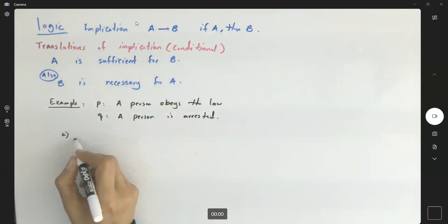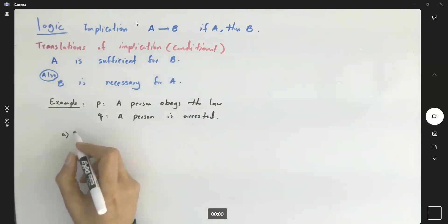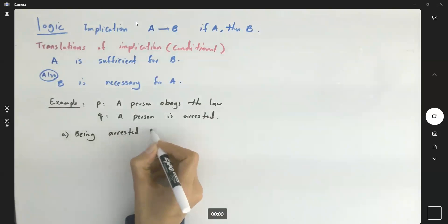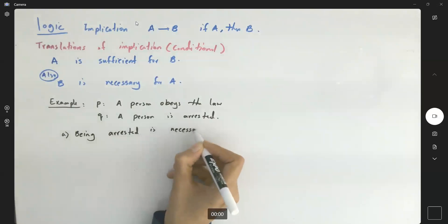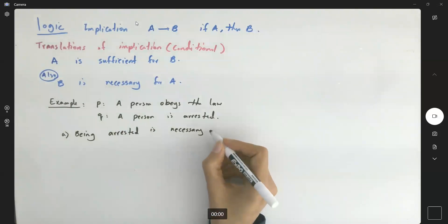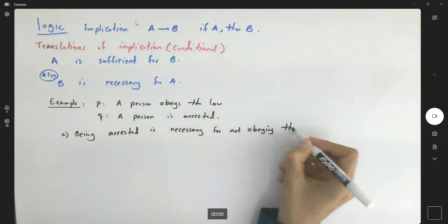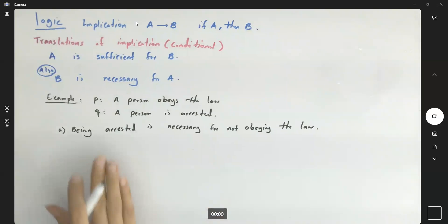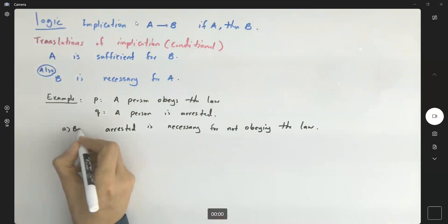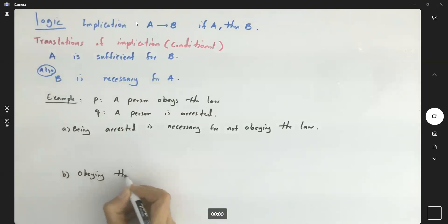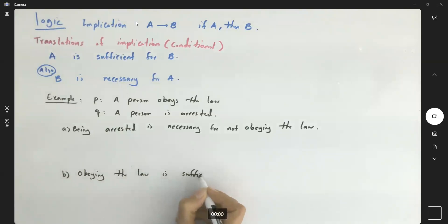The very first one says: 'Being arrested is necessary for not obeying the law.' Being arrested is necessary for not obeying the law. And the second one says: 'Obeying the law is sufficient for not being arrested.'